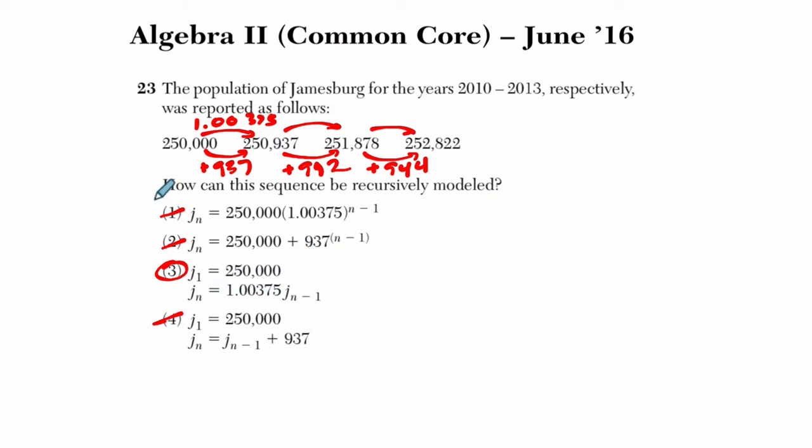I start at 250, that's what this is saying. The first term is 250. Then I multiply by 1.00375 by each previous term after that.